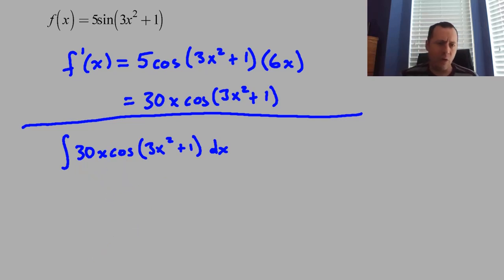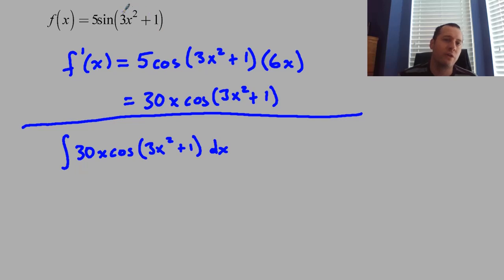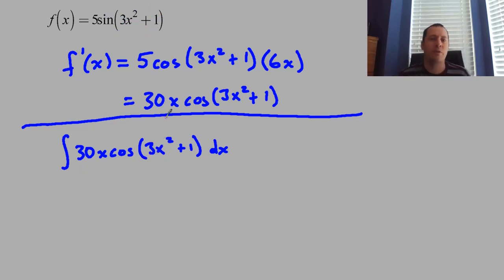This is the tricky part until you understand substitution—it's not so bad once you do. Substitution is a tool to undo a chain rule. A chain rule occurs when you have a composite function—a function of a function, stuff inside of a function. This is where substitution is going to come into play.